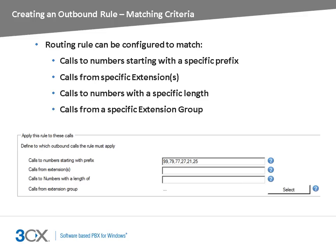You can also have this rule triggered for calls from specific extensions. This can be used when you want a specific line to be reserved for one or a few extensions. The rule can also be triggered for calls to numbers of a specific length, which is useful if the external numbers are all of the same length. You can also configure the rule to match calls from a specific extension group. Note that if multiple criteria are configured, all the criteria need to be matched for the rule to be triggered.